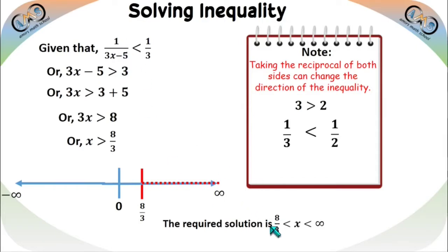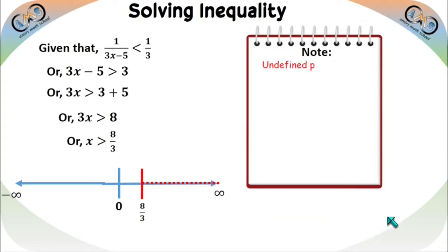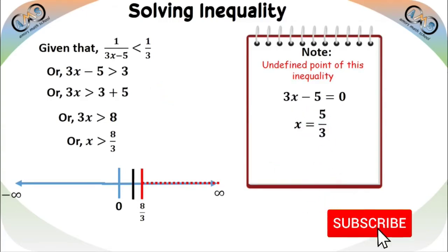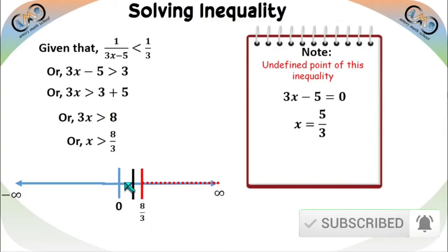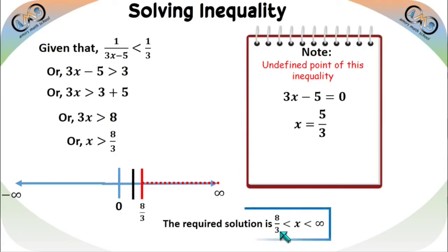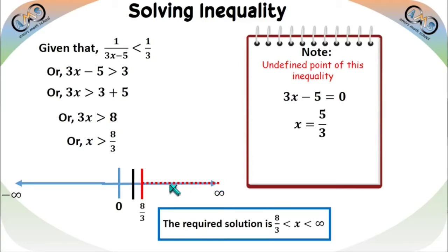For this type of fractional inequality we must check the undefined point. The undefined point occurs when the denominator equals zero: 3x−5 = 0, giving x = 5/3. At x = 5/3 the inequality is undefined. On the number line, 5/3 lies between 0 and 8/3 — it is not within our solution (8/3, +∞), so there is no problem. The required solution remains x ∈ (8/3, +∞). If the undefined point had been within the solution, we would need to exclude it.